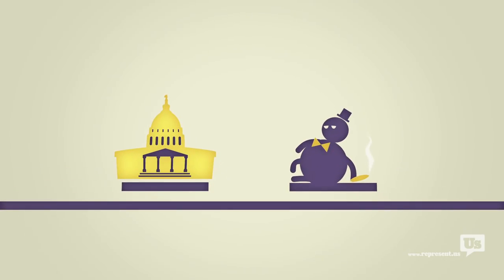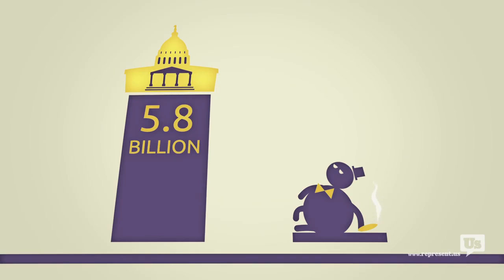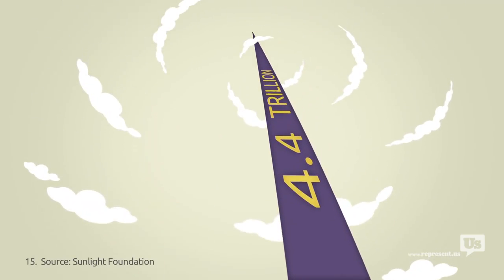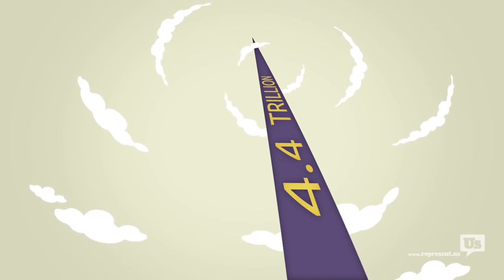In the last five years alone the 200 most politically active companies in the United States spent 5.8 billion dollars influencing your government. Those same companies got 4.4 trillion in taxpayer support. And that's trillion. With a T. And that's just the top 200 companies.